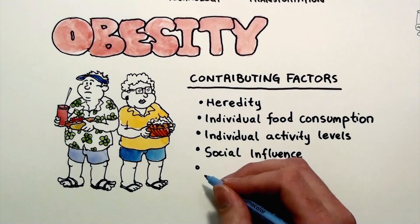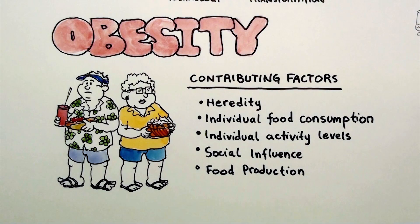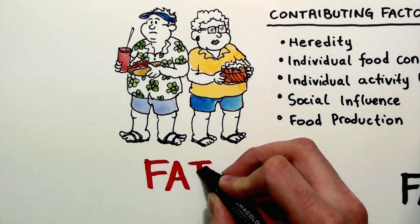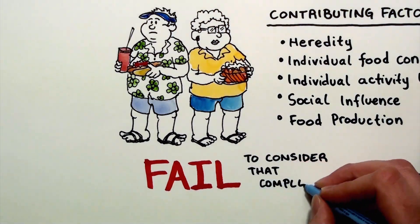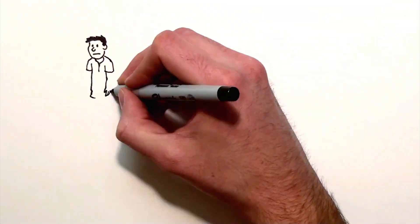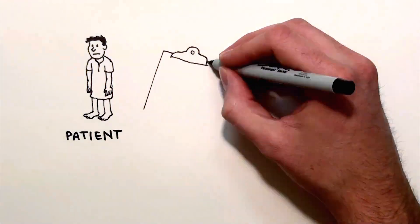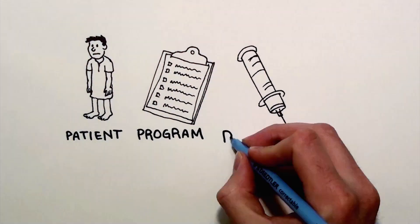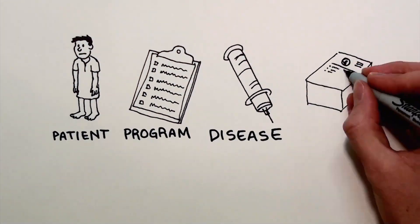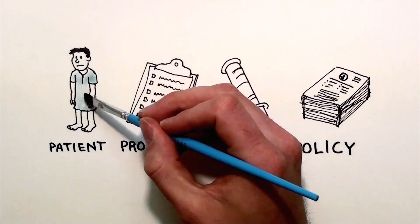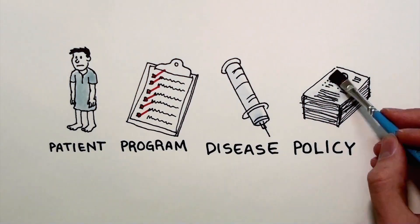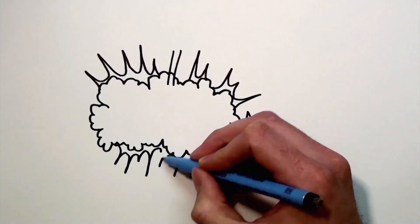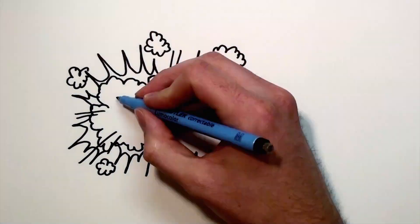These factors are diverse, myriad, context-dependent, and constantly changing. However, when we fail to consider that complexity in health, we generally address one patient, program, disease, or policy at a time without adequate consideration of the dynamic relationships, diverse perspectives, and invisible boundaries which influence health. Such an approach often leads to unintended consequences.